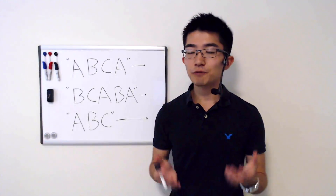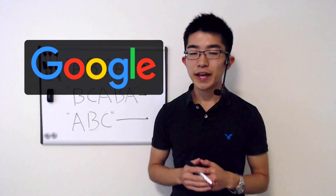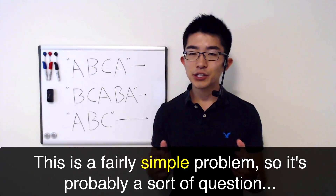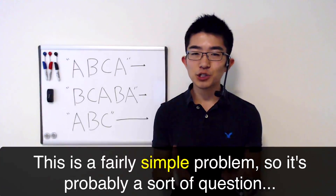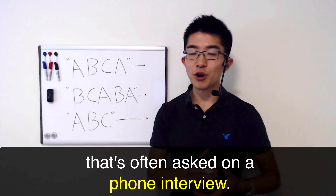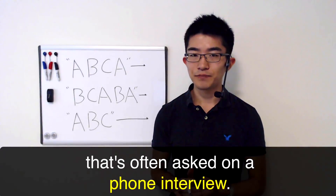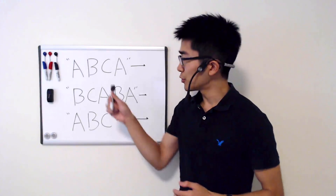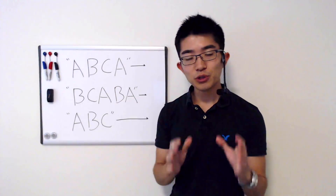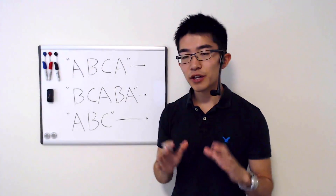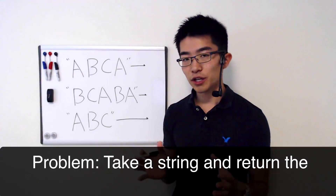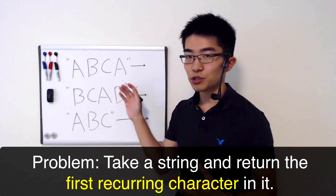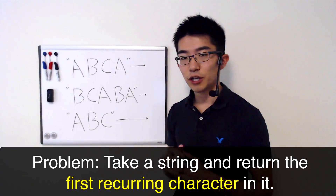Here's a coding interview question from Google. This is a fairly simple problem, so it's probably the sort of question that's often asked on a phone interview. You're given a string, and you're supposed to write a function that takes that string and returns the first recurring character in that string.